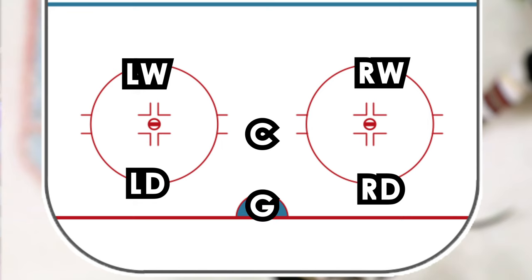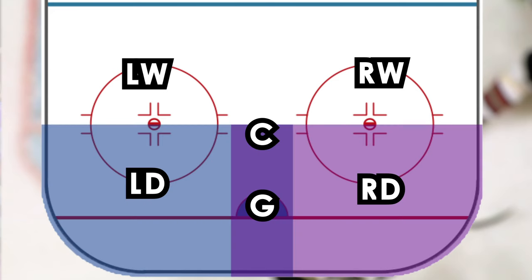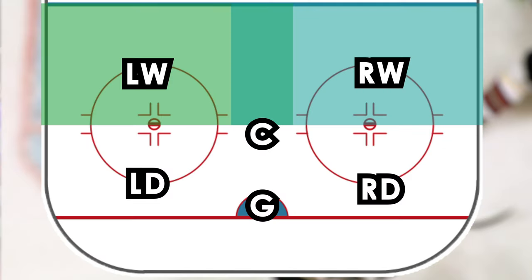At its most basic, the defensive strategy is a simple zone, with the two defensemen in charge of their respective corners, including the area behind the net, and stretching all the way up to somewhere in the middle of the faceoff circle, right around the faceoff dot. Meanwhile, the two wingers will take the remaining space from there up to the blue line, again on their respective sides of the ice.